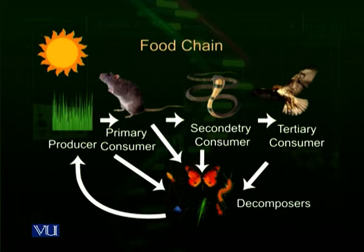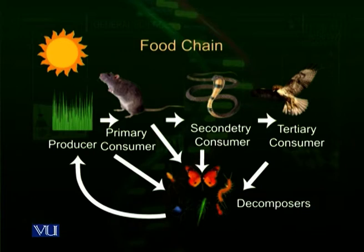Then the primary consumers are eaten up by snakes. We know that reptiles inhabit the grasslands and the snake is a reptile. Snakes eat upon these rodents, so we call the snakes secondary consumers. In grasslands, snakes are very common and they eat upon the moles, shrews, rats, and other types of rodents.